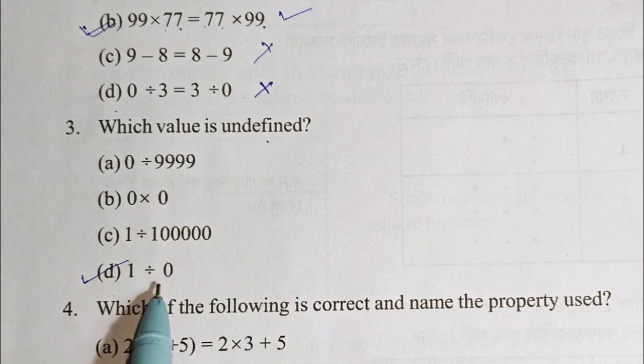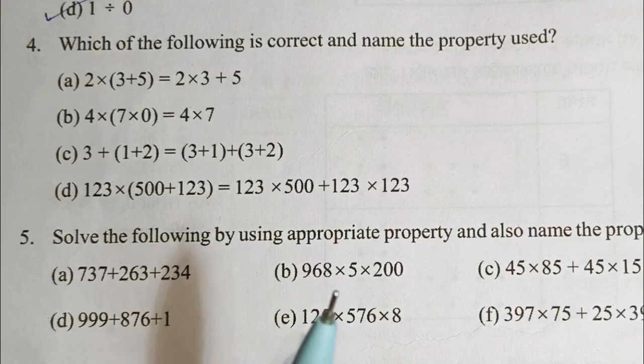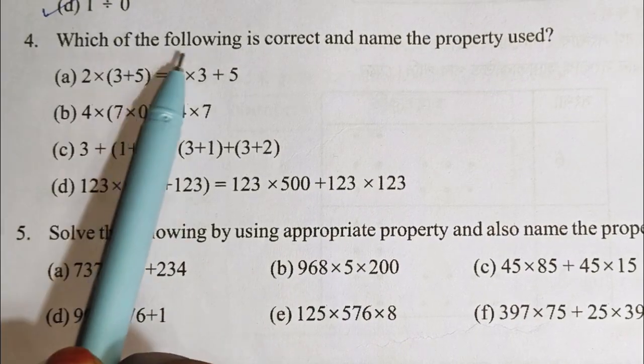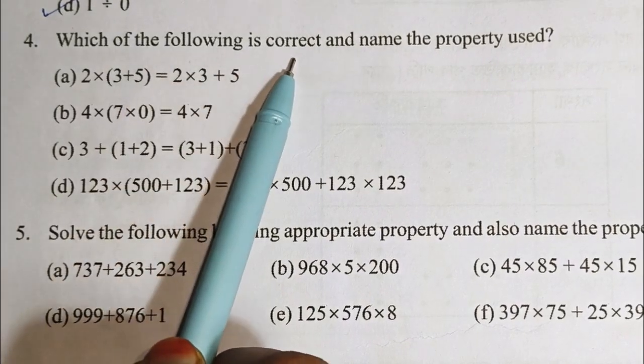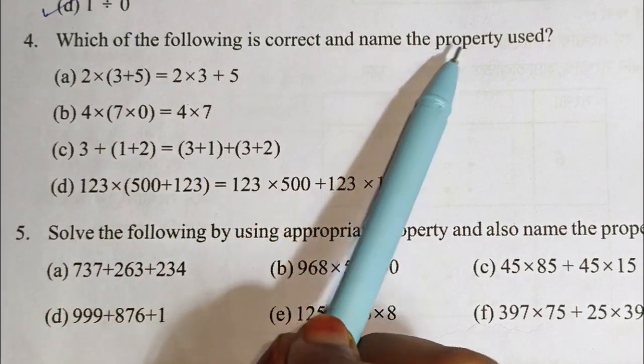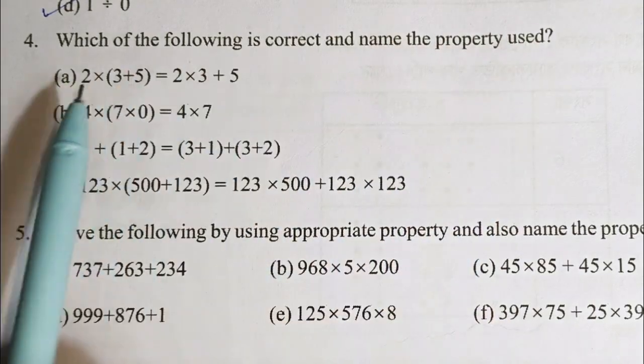1 divided by 0 is undefined. Question number 4: Which of the following is correct? Name the property used.